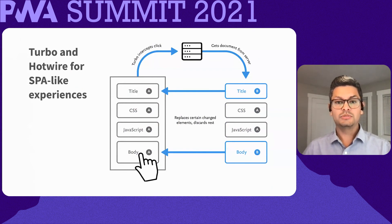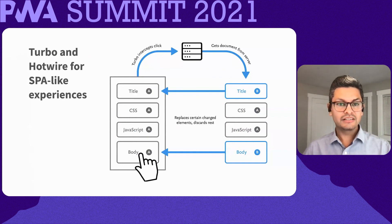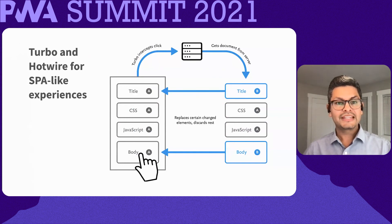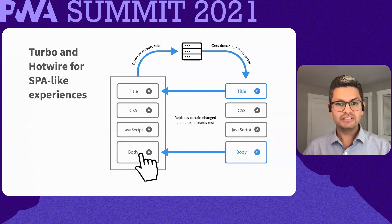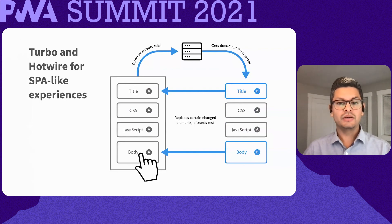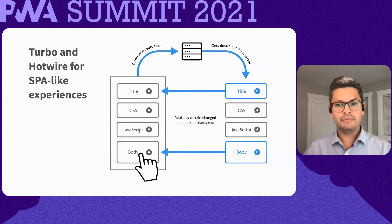One example is Turbo Drive. Turbo Drive intercepts regular links, requests the new page using the Fetch API, and then renders the HTML response. The full HTML document is downloaded initially, but only the relevant parts are updated, which means you can provide SPA-like transitions in a multi-page application.